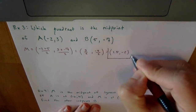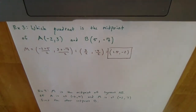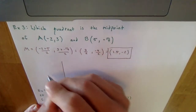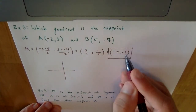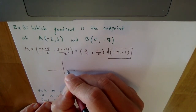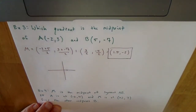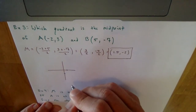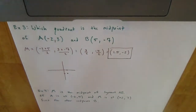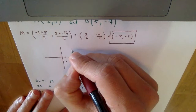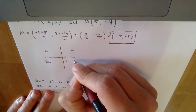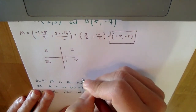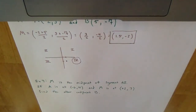The midpoint is 1.5 comma negative 2. On a graph, 1.5 is positive in the x-direction and negative 2 is below the x-axis. Drawing the quadrants — quadrant 1 (top right), quadrant 2 (top left), quadrant 3 (bottom left) — this point falls in quadrant 4.